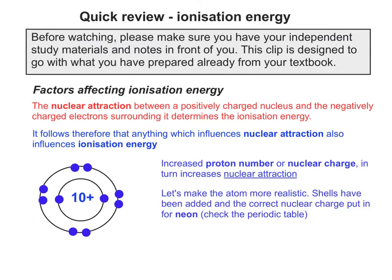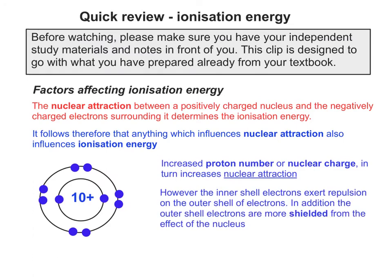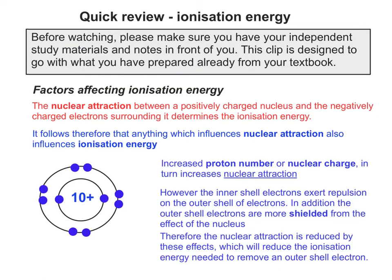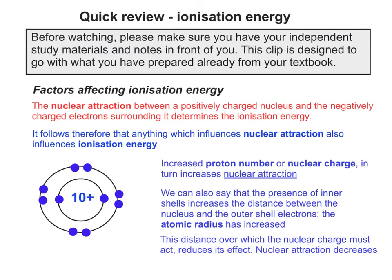I've now turned the atom into something more realistic. We talked about neon earlier, so it's got two electrons in its first shell and eight electrons in its second shell. The nuclear charge is much stronger than before, but the inner shell electrons exert repulsion on the outer shell electrons, and the outer shell electrons are more shielded from the nucleus. This reduces nuclear attraction and therefore reduces the ionisation energy needed to remove an outer shell electron. The presence of inner shells also increases the distance between the nucleus and the outer shell electrons, so atomic radius has increased, further reducing nuclear attraction.